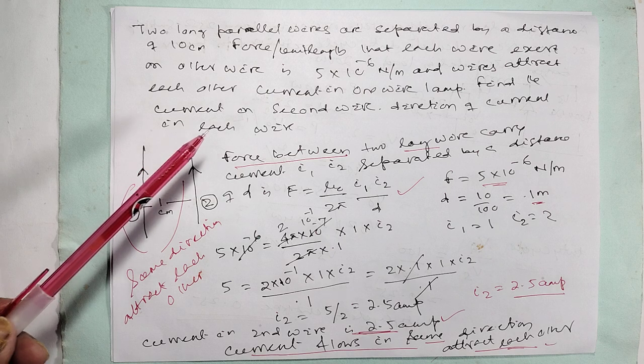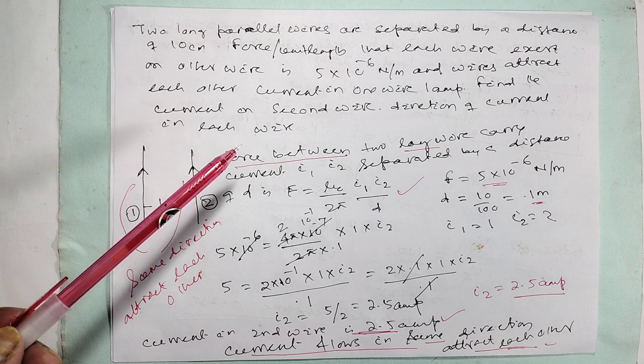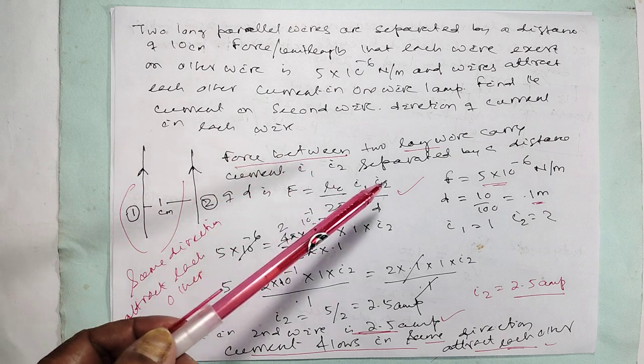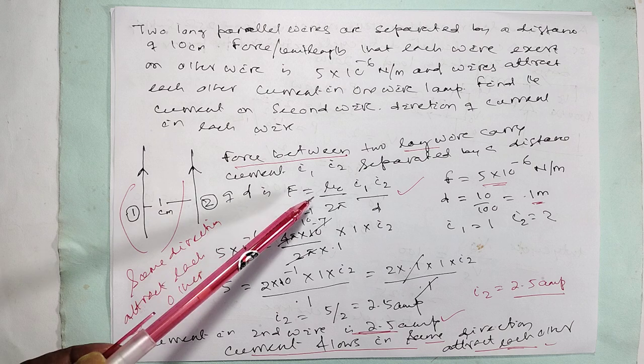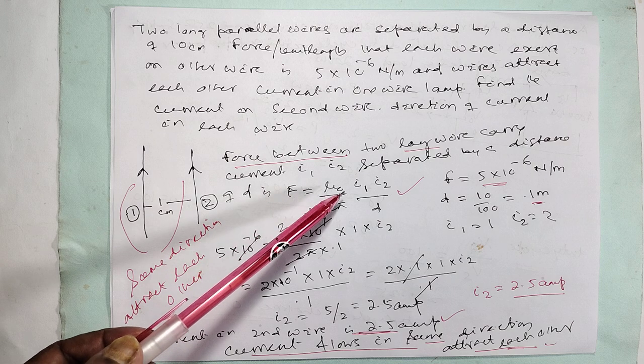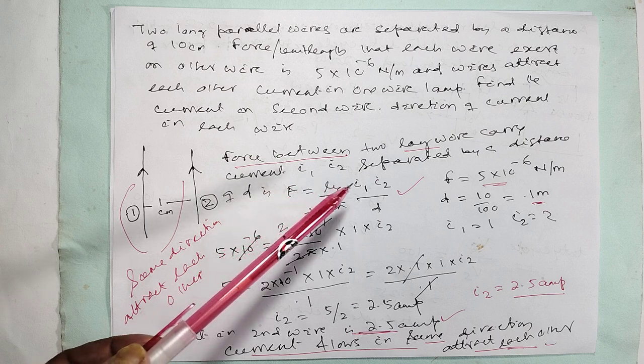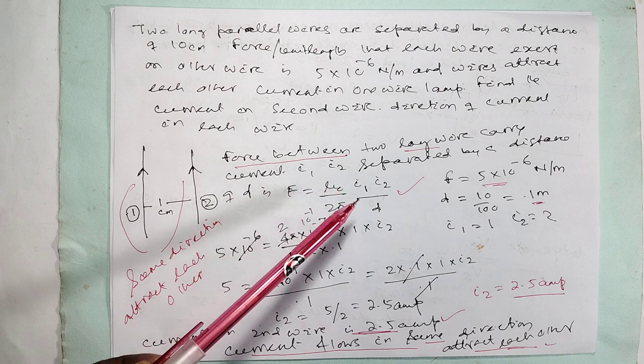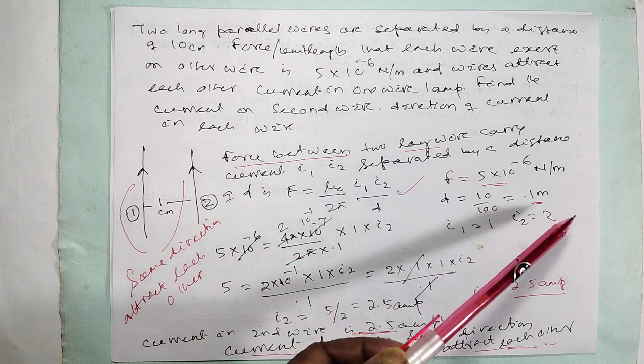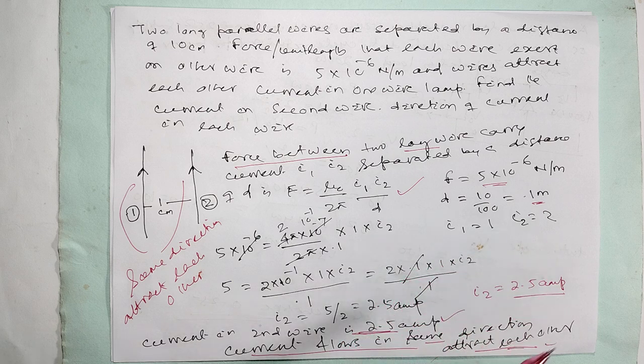The force between two long wires carrying current I1 and I2 separated by distance D is given by the formula: μ0 by 2π times I1 I2 by D. Here F is given as 5 x 10^-6 N, D is equal to 0.1 meter, I1 is 1. You have to find I2.